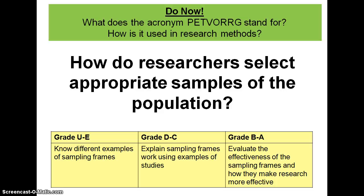Researchers will select samples of populations to make sure that they are studying the right people. They won't research the whole of the population because it will take too long and cost far too much. So they use a sampling frame to select people to participate in their studies.